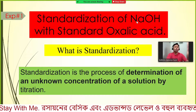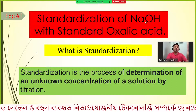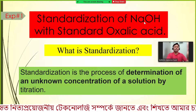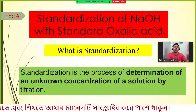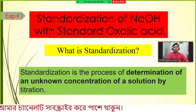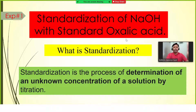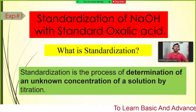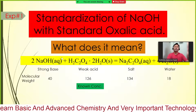We know several strong bases such as sodium hydroxide, potassium hydroxide, and calcium hydroxide, and there are many weak organic acids like acetic acid, oxalic acid, and ethanoic acid. If we understand how to estimate the concentration of sodium hydroxide with standard oxalic acid, we can determine the concentration of any strong base using any weak acid.